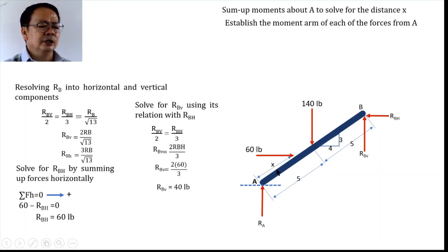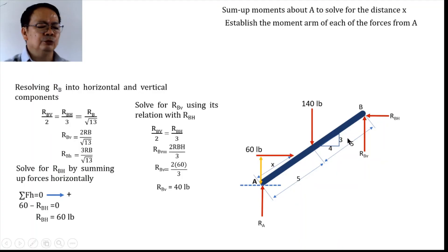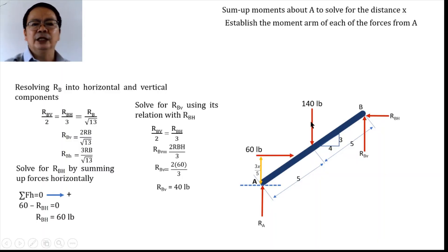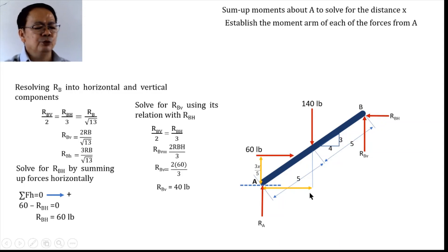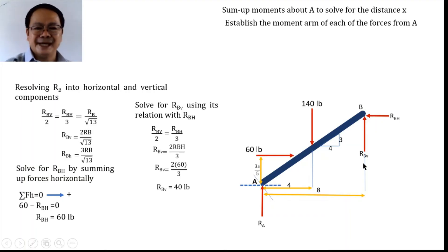We establish the moment arms of each force. The 60-pound force has a moment arm expressed by ratio and proportion equal to (3/5) of distance X, written as 3X/5. The 140-pound weight, also inclined at 3-4-5, has a moment arm of 4 feet. The moment arm of R_BV from point A is 8, and the moment arm of R_BH from point A is 6.